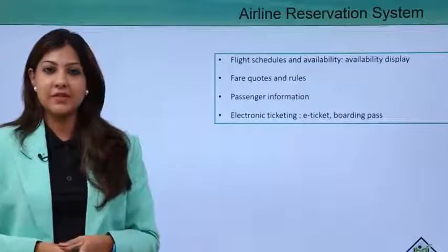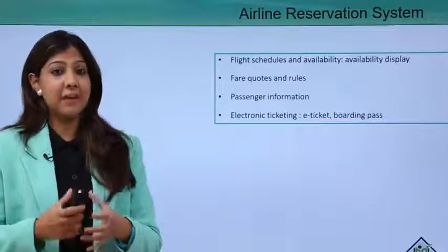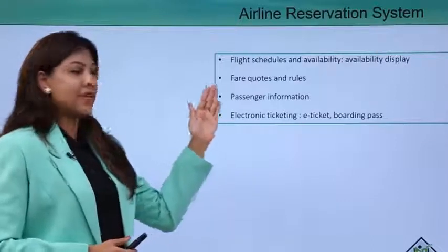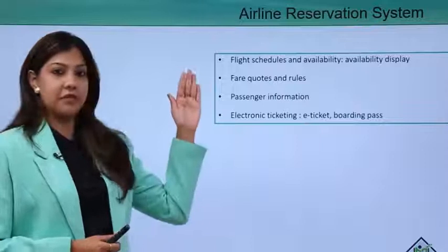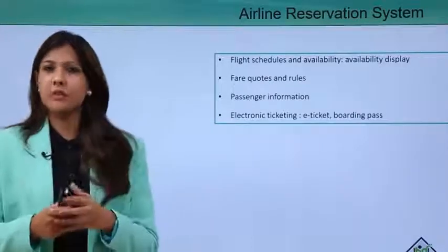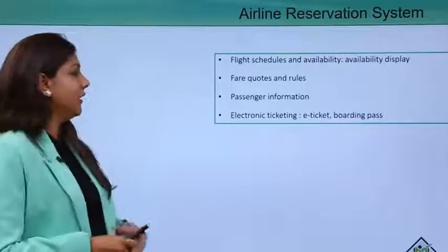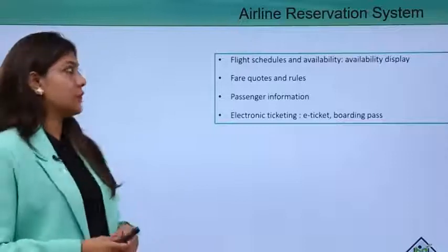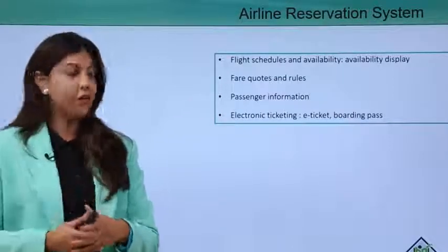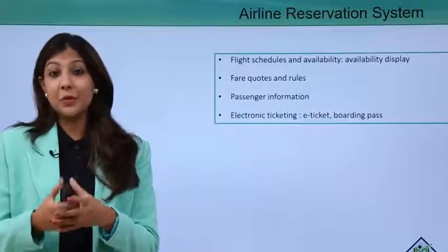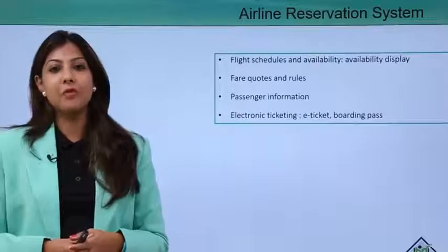The Airline Reservation System (ARS) covers everything related to flight scheduling, availability, dispatching, fare codes, and rules. Fares are decided in advance for each airline and each destination it flies to. Some fares are refundable and some are non-refundable, and the airline decides that at a macro level. Passenger information is captured through the reservation system, including ID details. We also have electronic ticketing — e-tickets and boarding passes which passengers can retrieve online, thanks to digitalization.